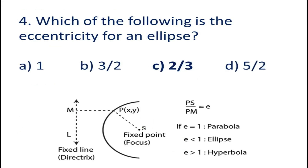Question number 4: Which of the following is the eccentricity for an ellipse? A. 1, B. 3/2, C. 2/3, D. 5/2. Friends, we know that the eccentricity of an ellipse is less than 1. So the value less than 1 among the options is 2/3. So the answer will be C.